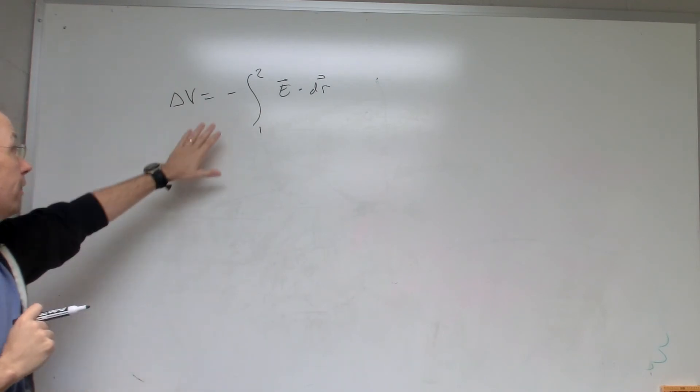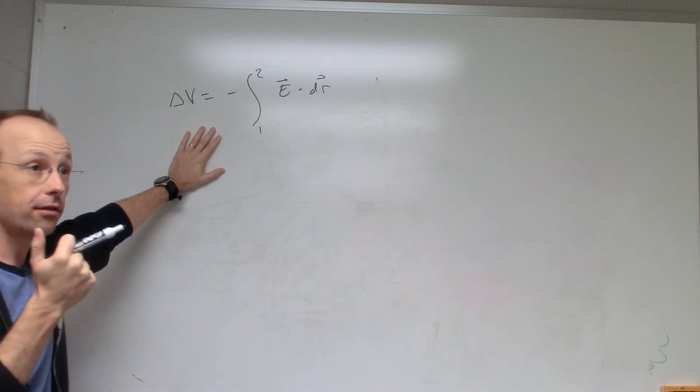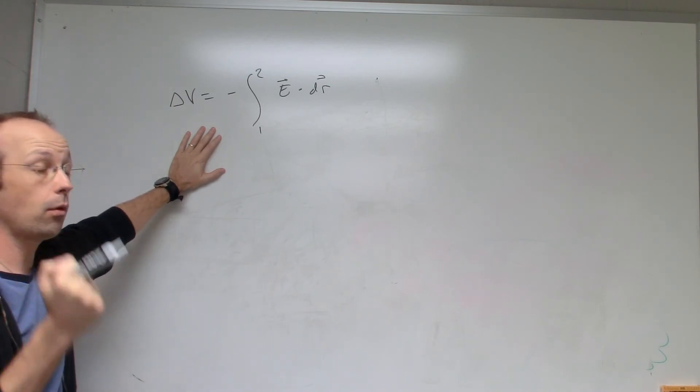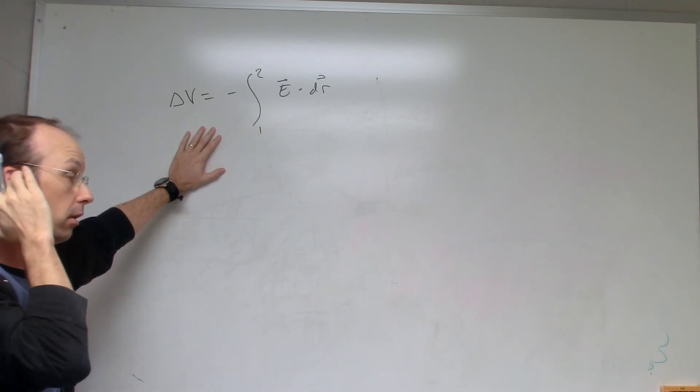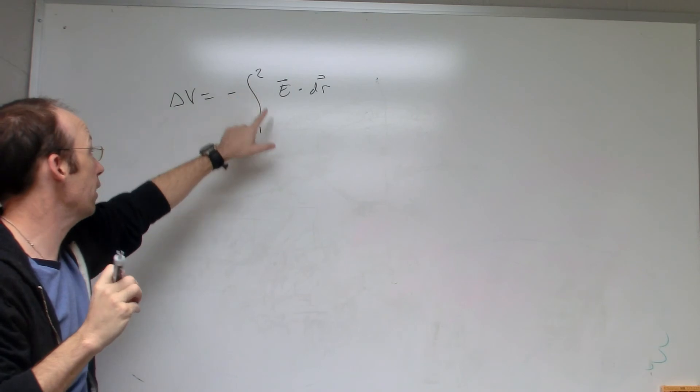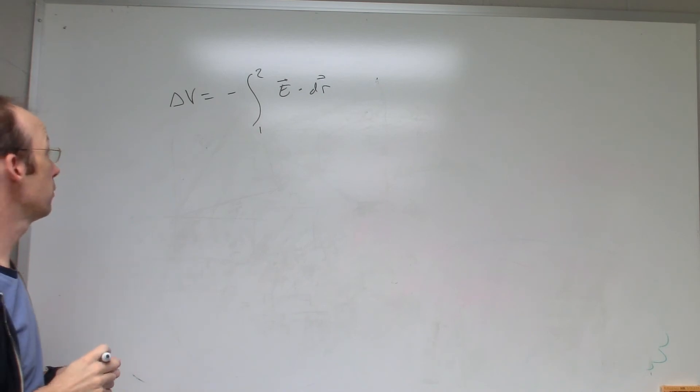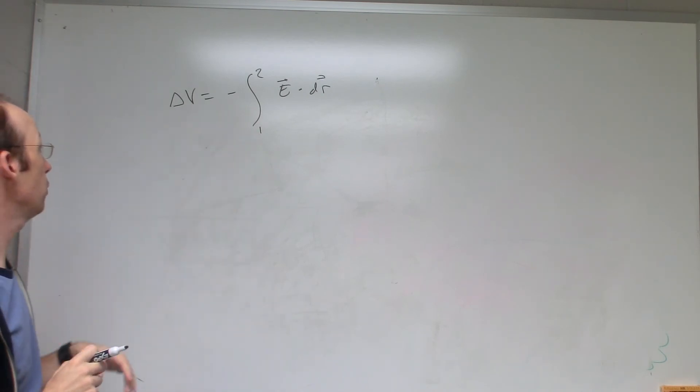So a couple of important things with this. Since the electric field is a lot like the gravitational field, in that it's what we call a conservative field, and that means it doesn't matter what path you take from point 1 to point 2, the change in electric potential will be the same value. That's the true definition.